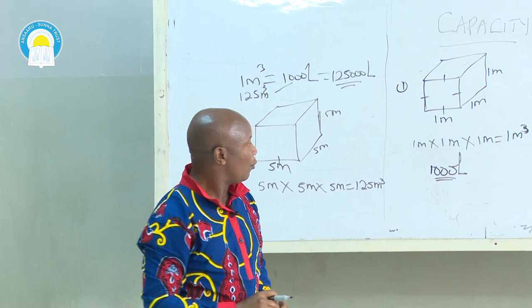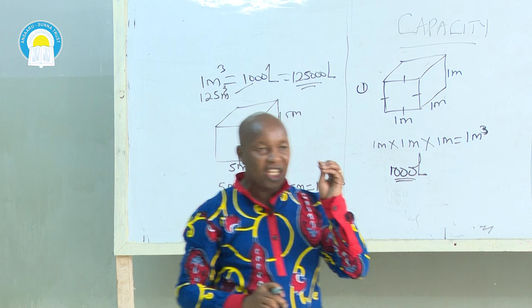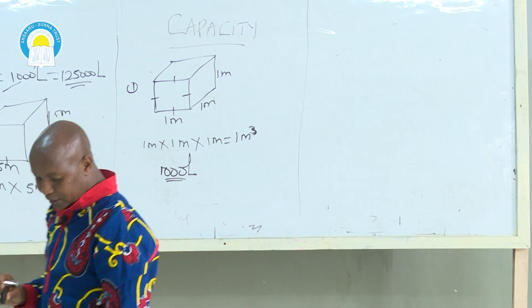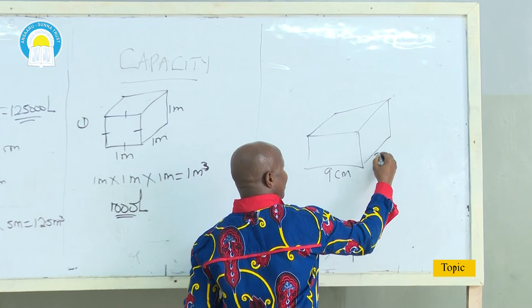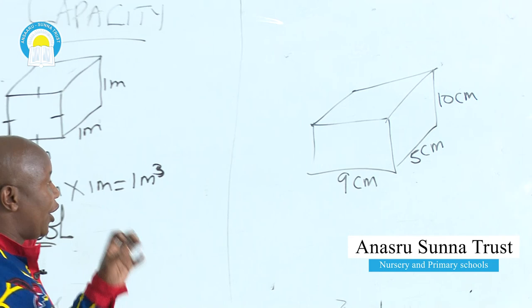Let us go to other examples using cubic centimeters — I'll go straight to cuboids. Remember, we have cubes and we have cuboids. A cube has all sides equal. But a cuboid has length, width, and height. That is the major difference between a cube and a cuboid. Let me give you a very good example of a cuboid. This cuboid has one side as 9 centimeters, another side as 5 centimeters, and the height as 10 centimeters.